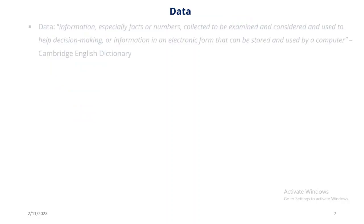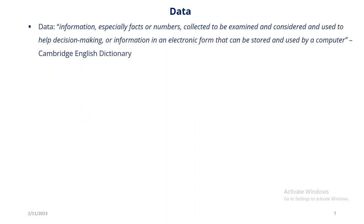Now let's look at data. What is data? The definition I have here is taken from the Cambridge English Dictionary. It says data is information — especially facts or numbers collected to be examined and considered and used to help decision making — or information in an electronic form that can be stored and used by a computer. In programming, data is an essential part of any programming language, including Python.